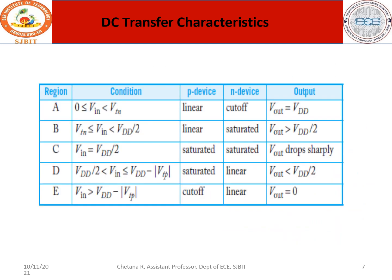As a summary: across regions A, B, C, D, E — for PMOS the sequence is linear, linear, saturated, saturated, cutoff; and for NMOS it is cutoff, saturated, saturated, linear, linear. This is the summary of the entire DC transfer characteristics.